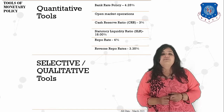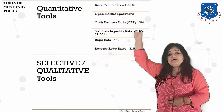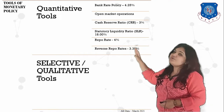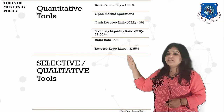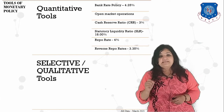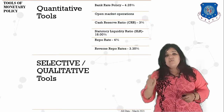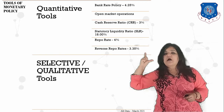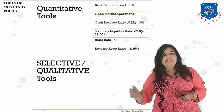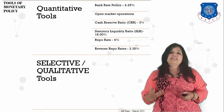Let us now see the selective or qualitative tools. Quantitative tools decide the quantity of credit to be floated in the economy. But qualitative tools decide to which particular sectors loans must be given — how credit or investment in each and every sector is balanced. These tools determine where the money will be used.